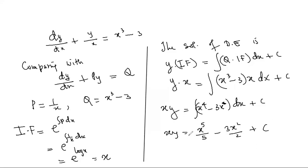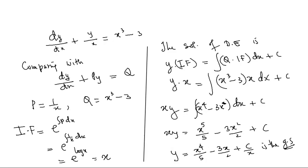If you feel like it, you can divide by x and make y the subject: y = x⁴/5 − 3x/2 + c/x, which is the general solution. It is up to you whether to make y the subject or not. You can write the answer in either format, but usually it is better to make y the subject. Can you practice one question yourself? Here is question number two.